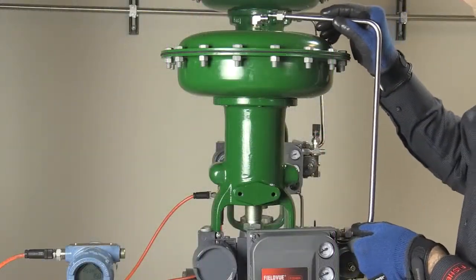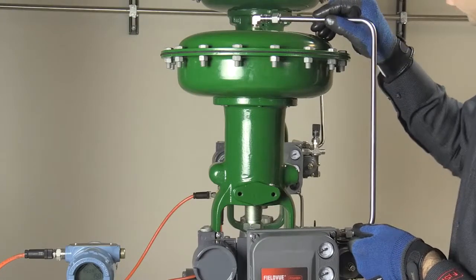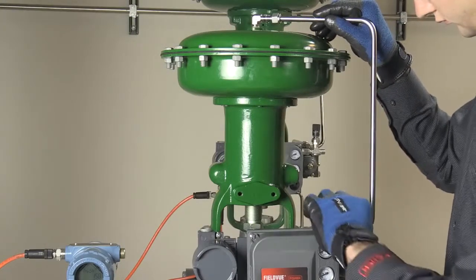At this point, use tubing to connect the actuator's pneumatic input port with the DVC's output port.